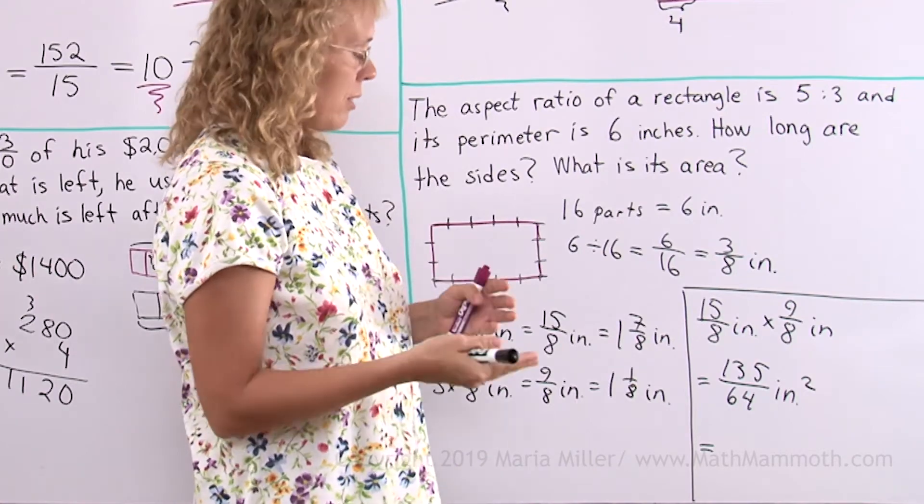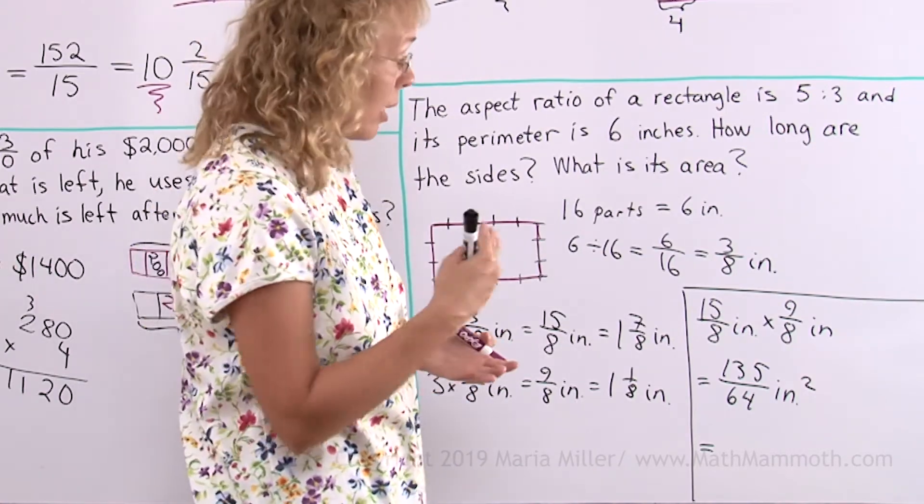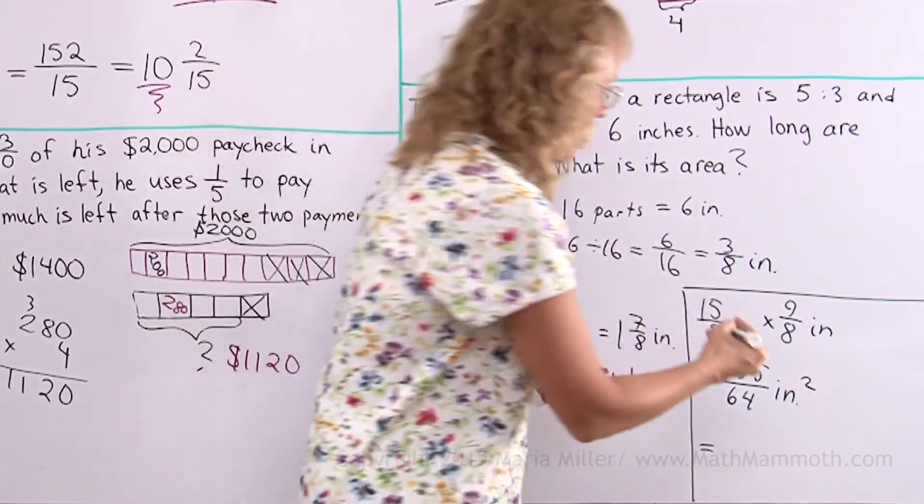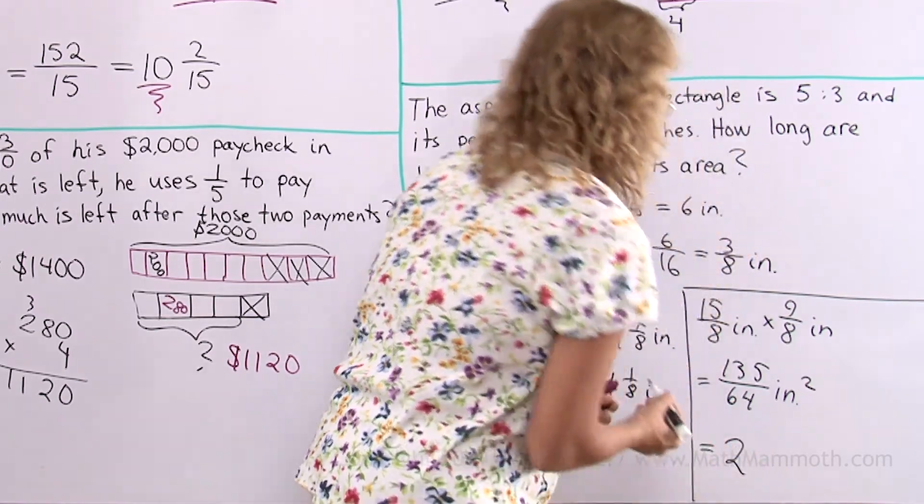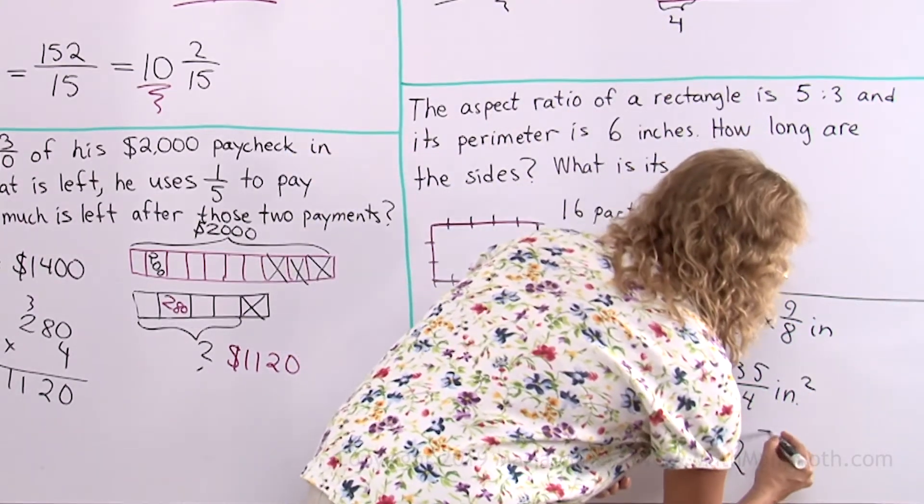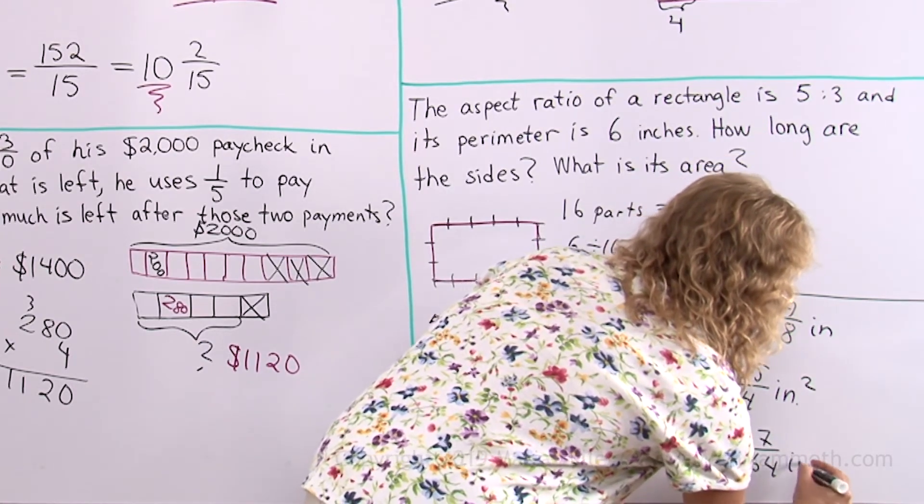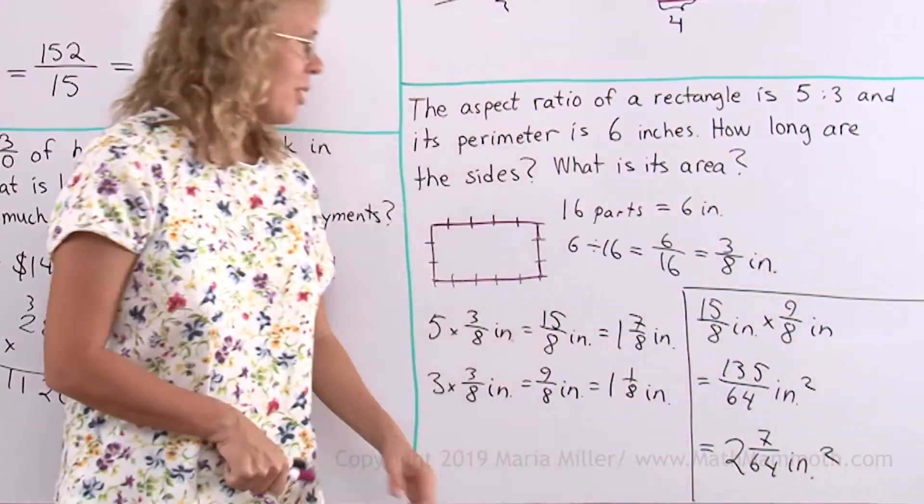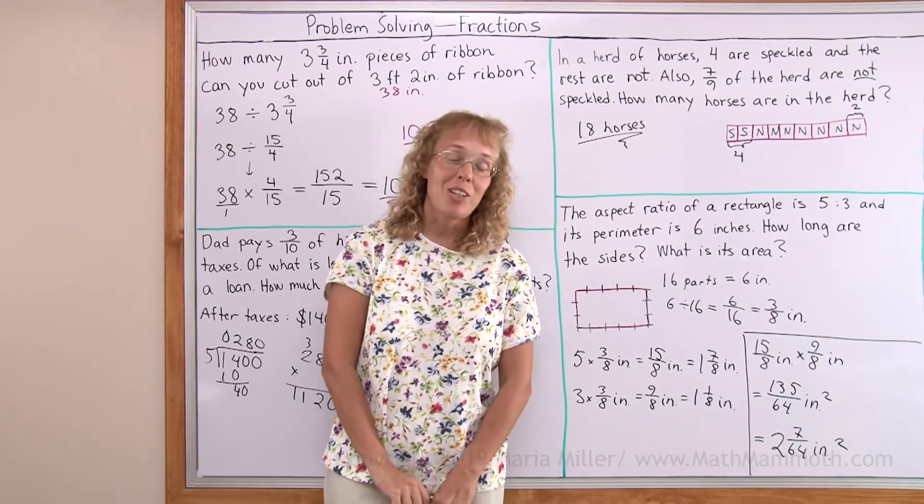64 plus 64. 64 times 2 would be 128. So there's 2 here. And then 128, 135, the difference is 7. Okay, that's the area, 2 and 7 over 64 square inches. And we are all done with our problem solving. I hope you had fun.